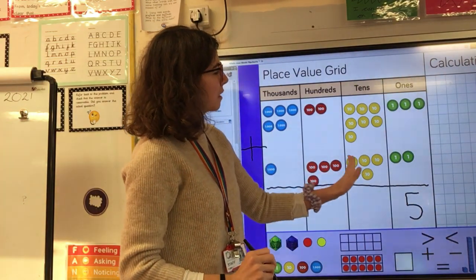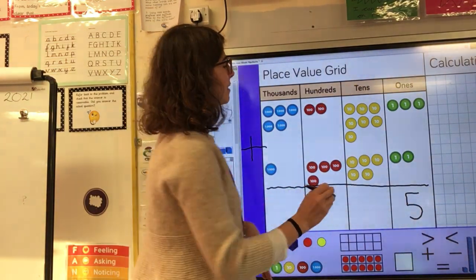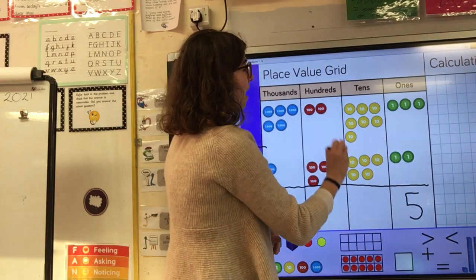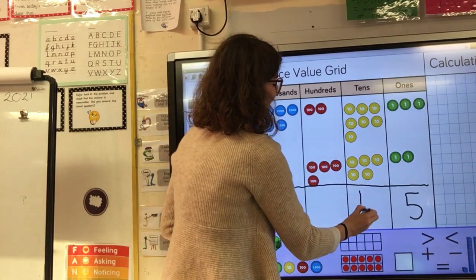Then I move on and I look at my tens column. Now I can see that I've got seven tens add five tens. So all together I have got 12 tens.